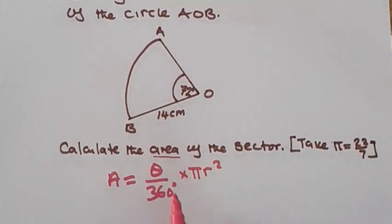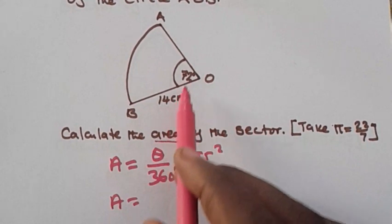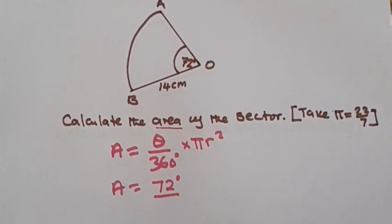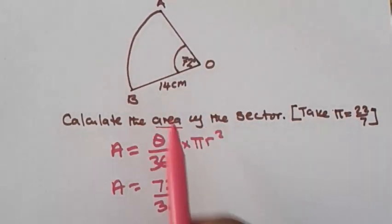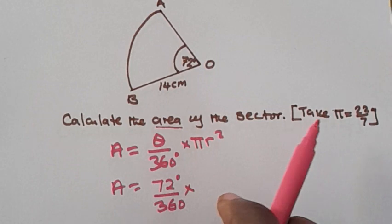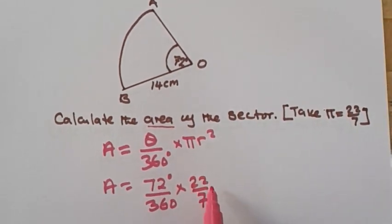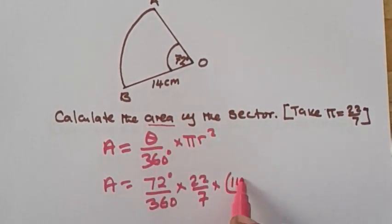Now we start replacing. Area is equal to — theta is the central angle, so it's 72 degrees divided by 360 degrees, times pi. We've been told to take pi to be 22 over 7, then times the radius. The radius has been given as 14 centimeters, and everything is being squared.